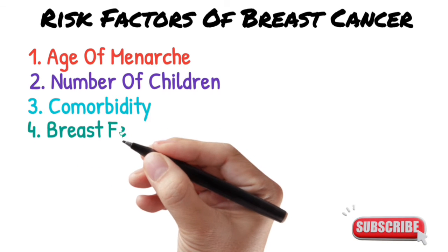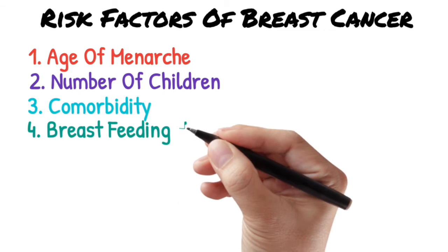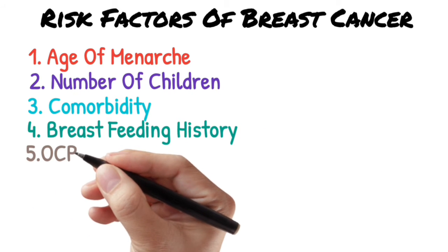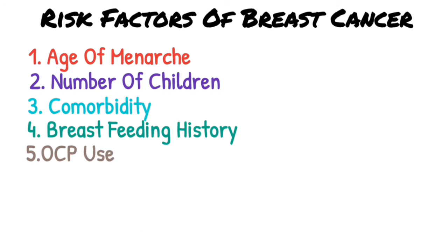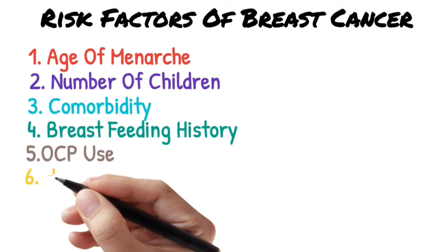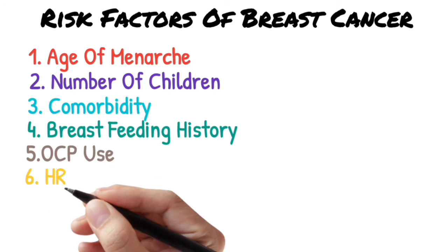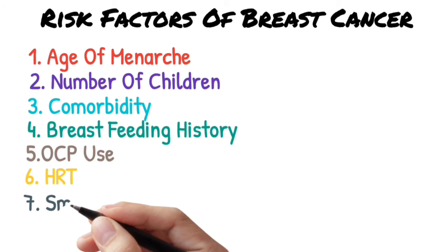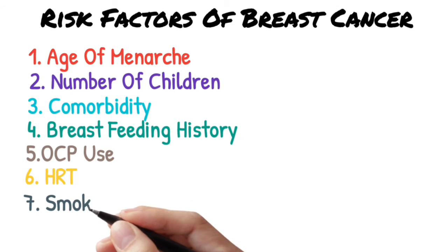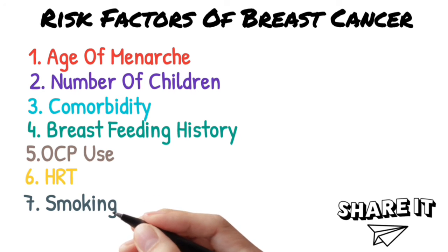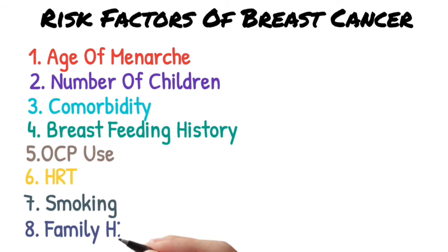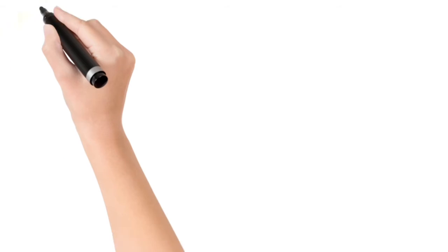If there is no history of breastfeeding, there are more chances of breast cancer. OCP use increases the risk of breast cancer while it prevents endometrial and ovarian cancer. HRT, which is hormone replacement therapy, increases the risk of breast cancer, while estrogen alone is beneficial. Smoking is again a risk factor, and family history is also a risk factor of breast cancer, so for every patient there should be a pedigree chart.